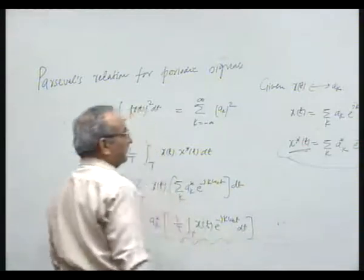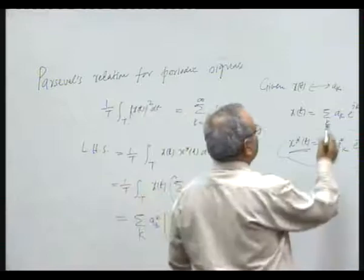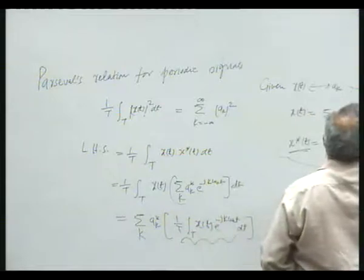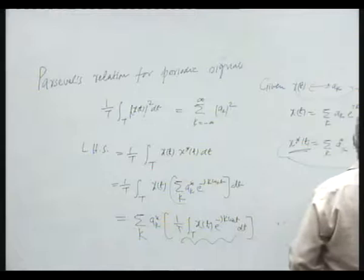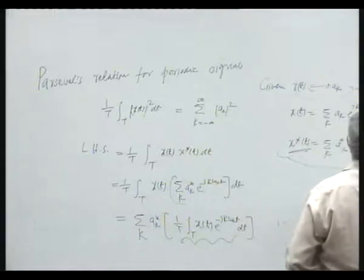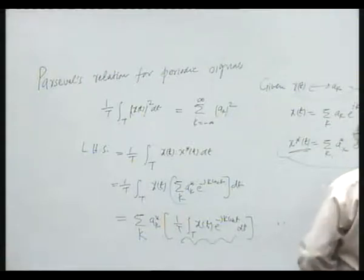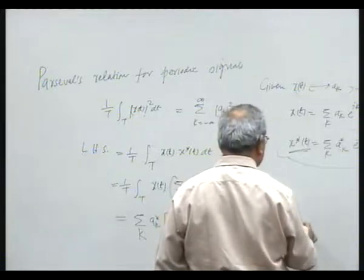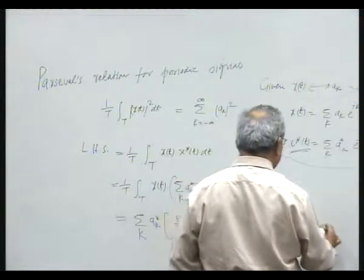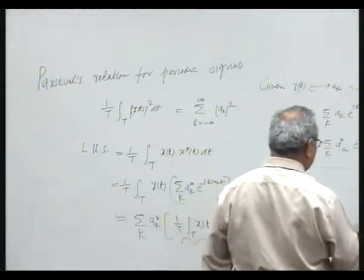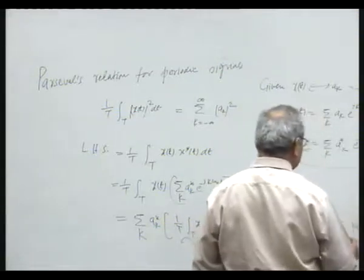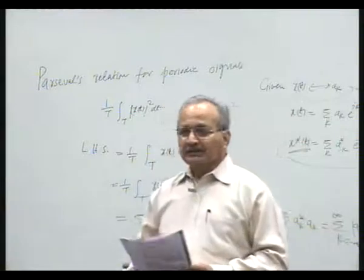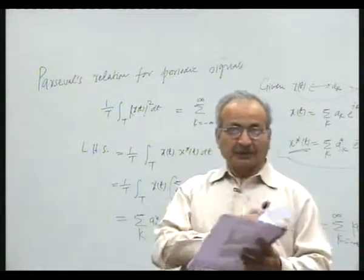This is a_k. We can write a_k, and this can be written as summation over k of a_k times complex conjugate a_k, that means summation over k of mod a_k squared. K ranges from minus infinity to infinity is implied. So, this verifies the Parseval's relation for a periodic signal.